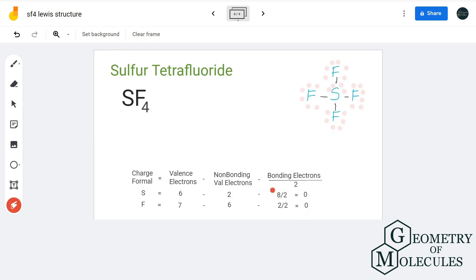So as the charges on all atoms are zero, this is the most stable structure for sulfur tetrafluoride. To know more about its molecular geometry, polarity, and other such properties, please check the link given in our description box. Thank you.